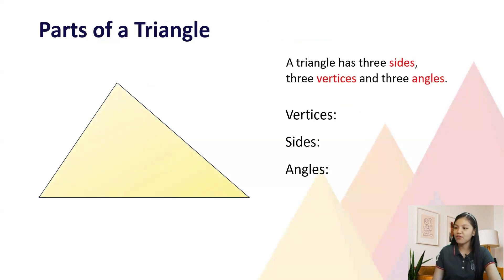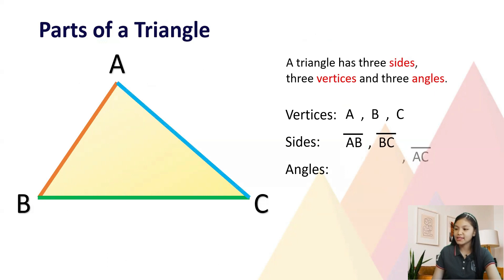Let's move on to the parts of a triangle. A triangle has three sides, three vertices, and three angles. To name a triangle, we use the three vertices which are A, B, and C. While the sides are line segment AB, line segment BC, and line segment AC.